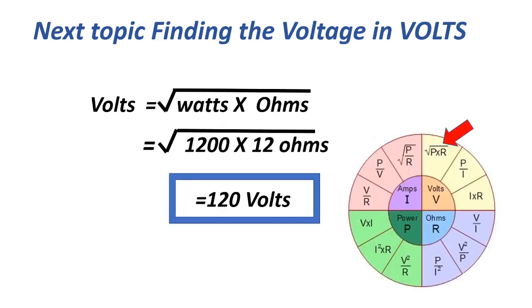The next voltage formula: volts equals the square root of watts times ohms, equals the square root of 1,200 times 12 ohms, equals 120 volts.